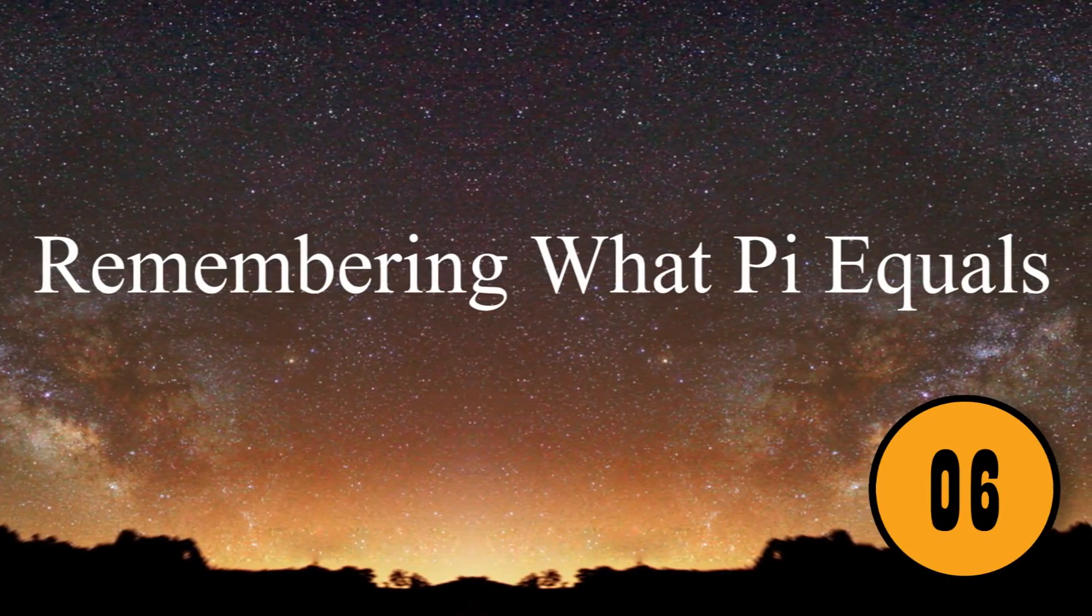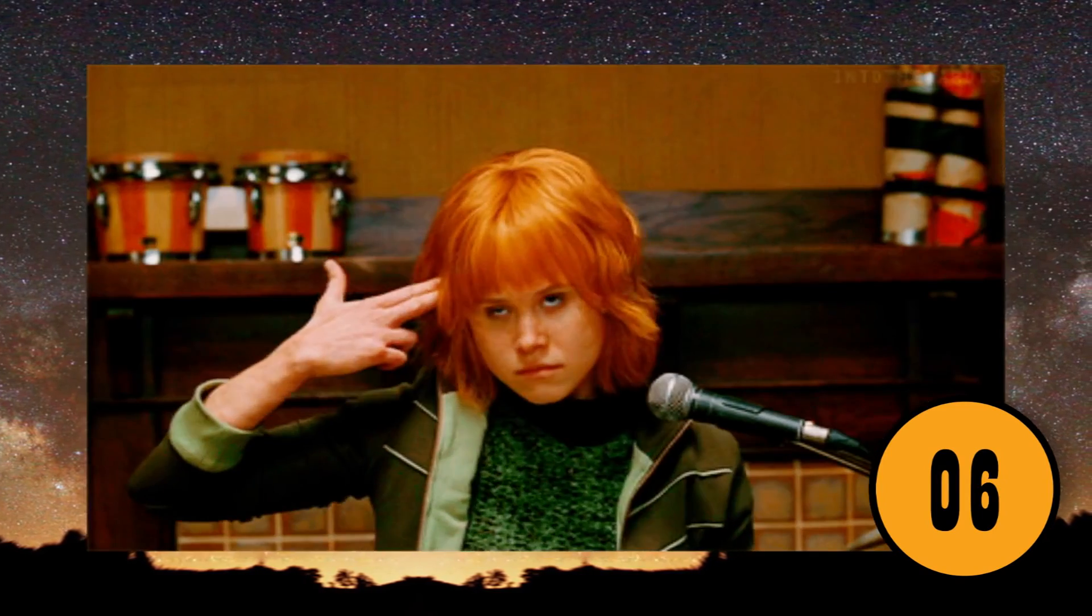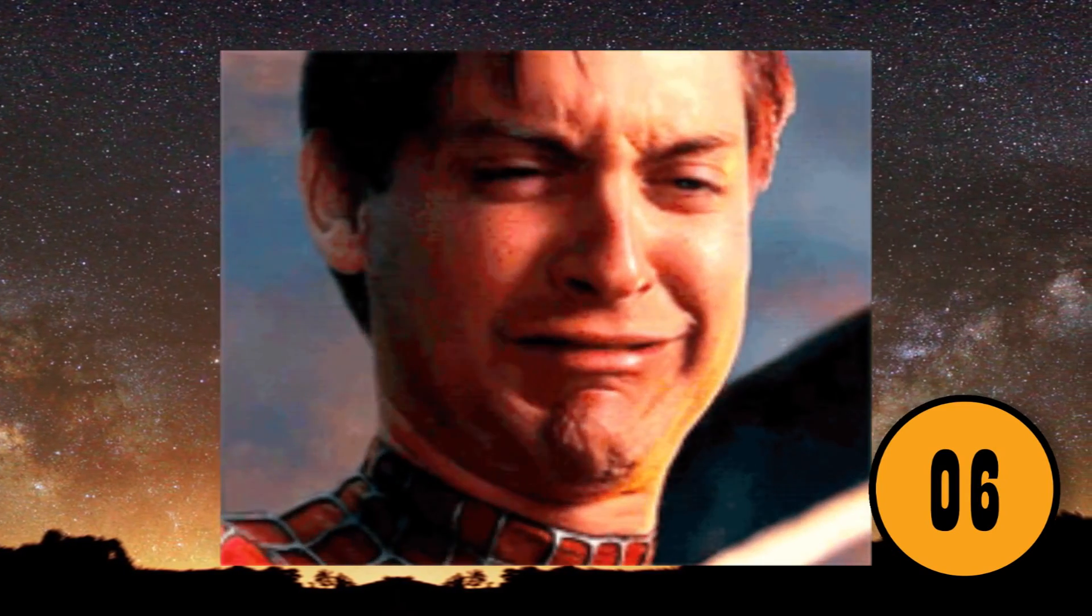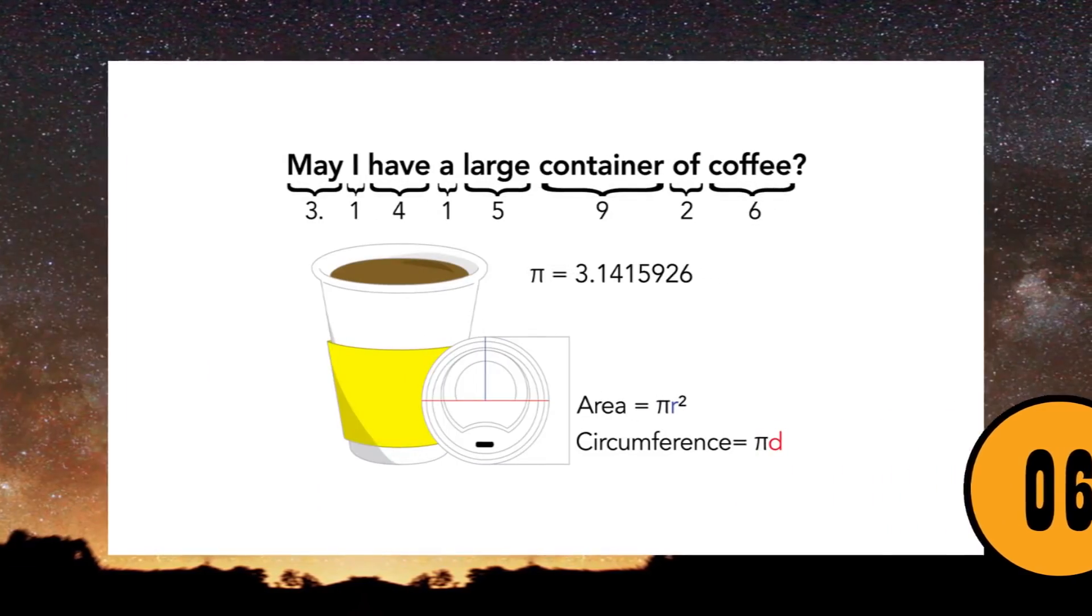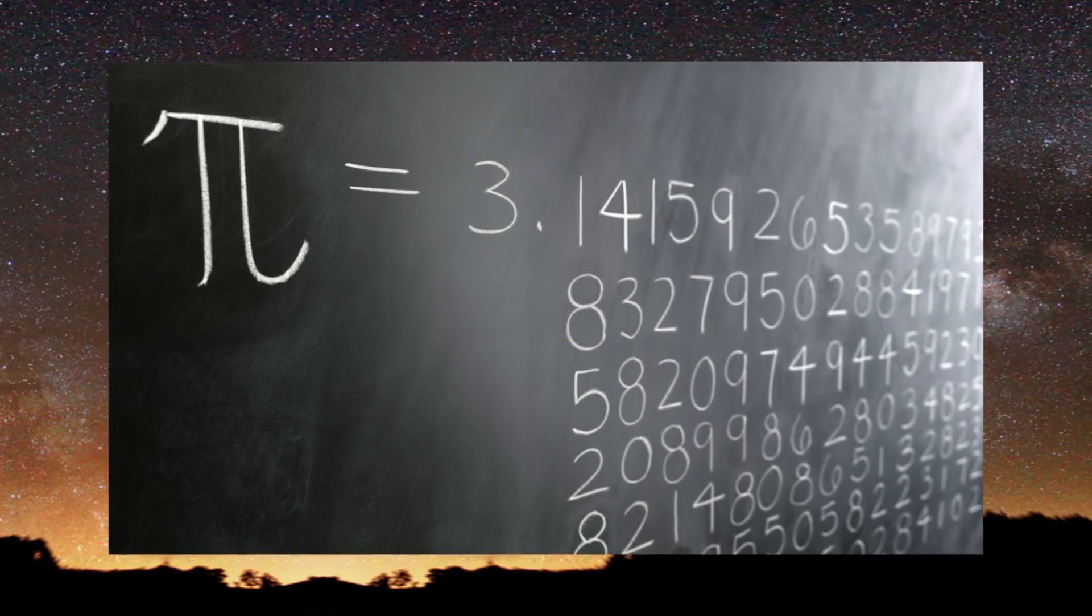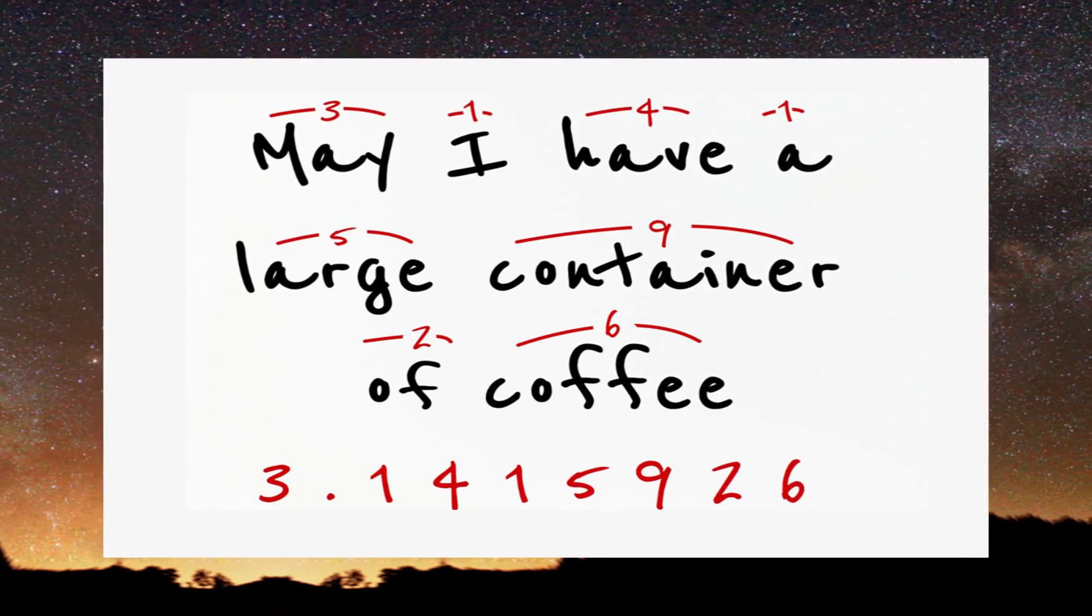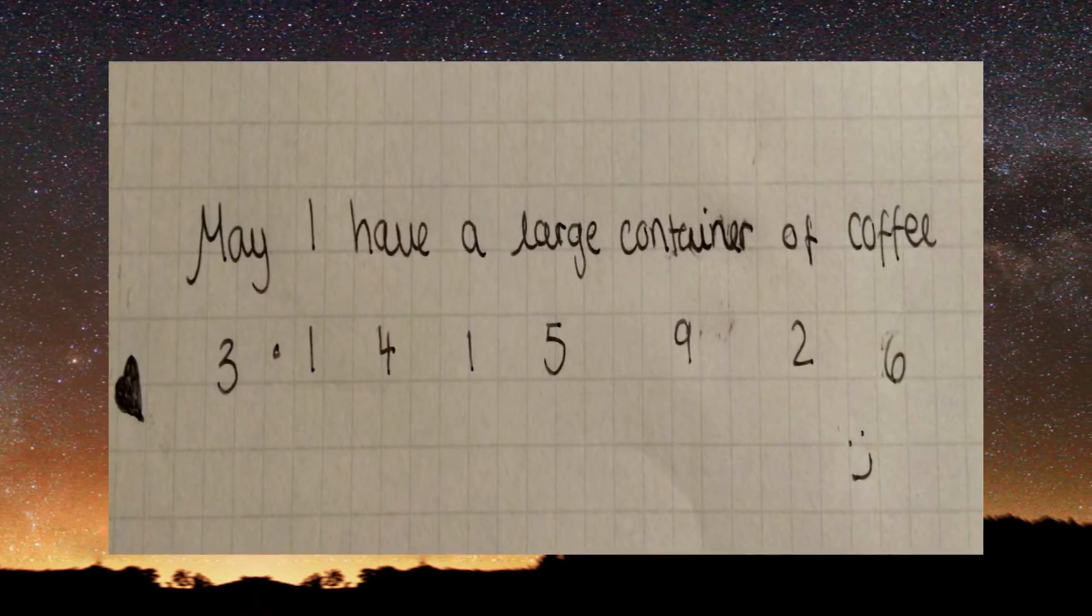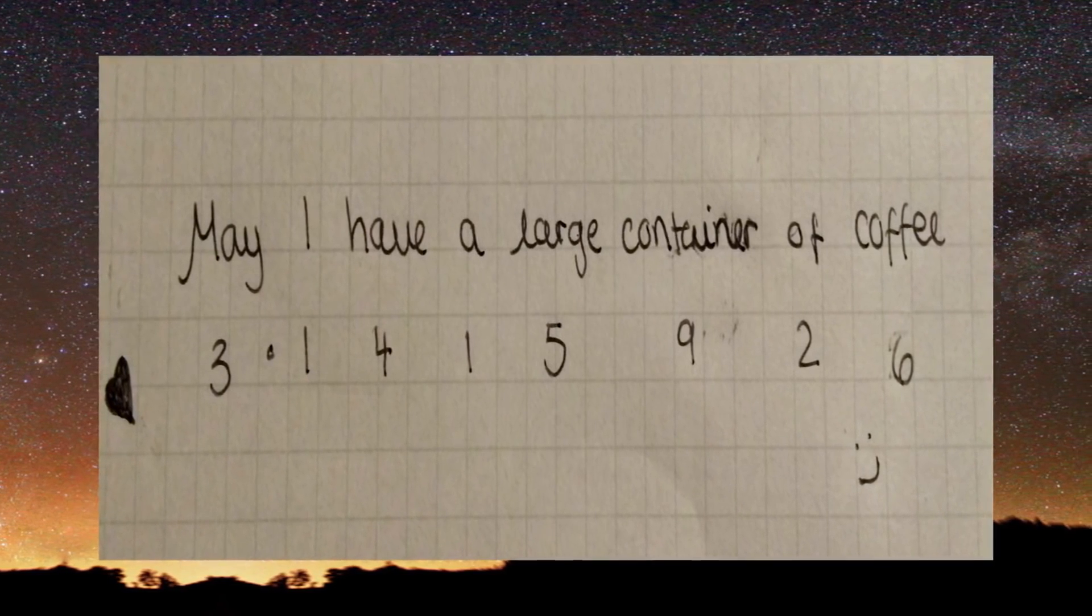Remembering What Pi Equals. Most people struggle to remember that Pi equals 3.1415926. If you can't remember what Pi equals, you just need to remember one simple phrase: May I Have A Large Container Of Coffee. The number of letters in each word corresponds to the numbers in Pi. May has three letters, therefore the first letter of Pi is three. The word I has one letter. Have has four letters, and so on. As long as you can remember the phrase, May I Have A Large Container Of Coffee, you should have no problem figuring out what Pi equals.